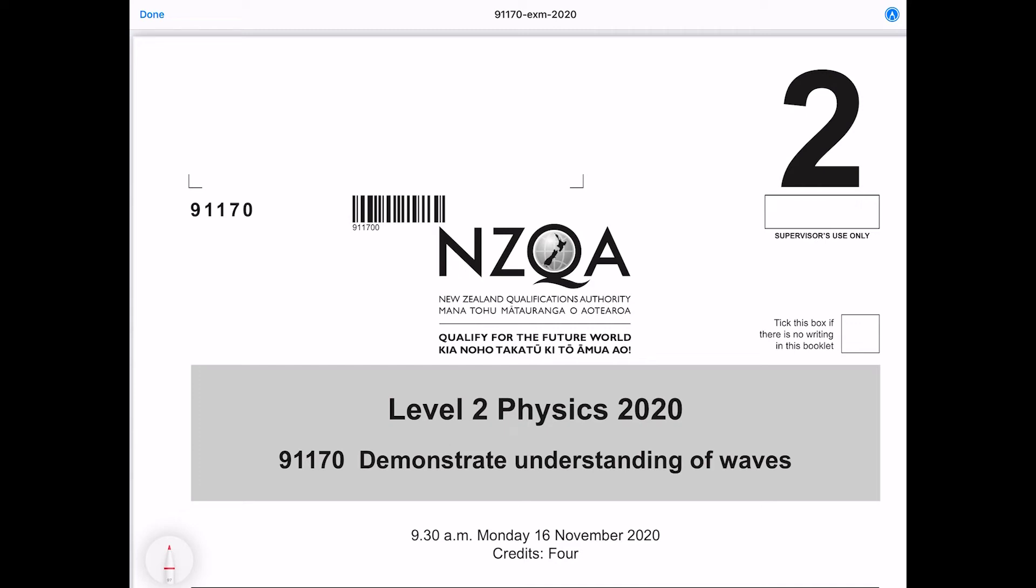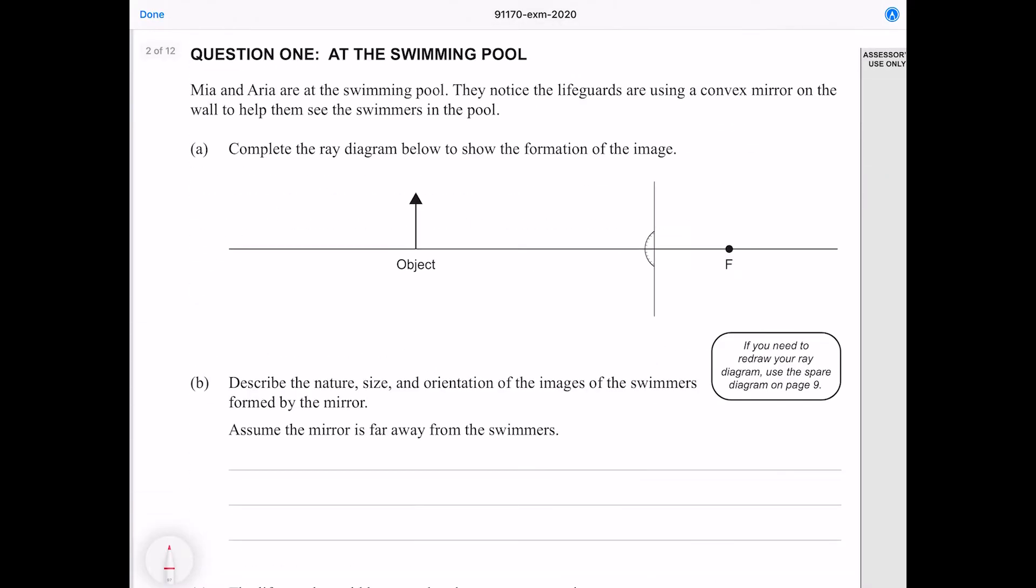In this video we'll be going through the 2020 waves exam. Question one: Mia and Aria are at the swimming pool. They notice the lifeguards are using a convex mirror on the wall to help them see the swimmers in the pool. Complete the ray diagram below to show the formation of the image. For this I'm going to draw three rays. We only really need two to find an intersection, but three rays is thorough and is a good double check in case we do one of the rays wrong.